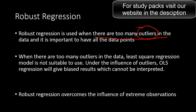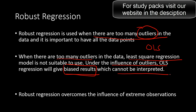When there are too many outliers, the ordinary least squares regression model is not suitable to use, because under the influence of outliers OLS will give biased results. When you have outliers in your data your results are going to be biased and cannot be interpreted. Robust regression overcomes this influence of extreme observations.